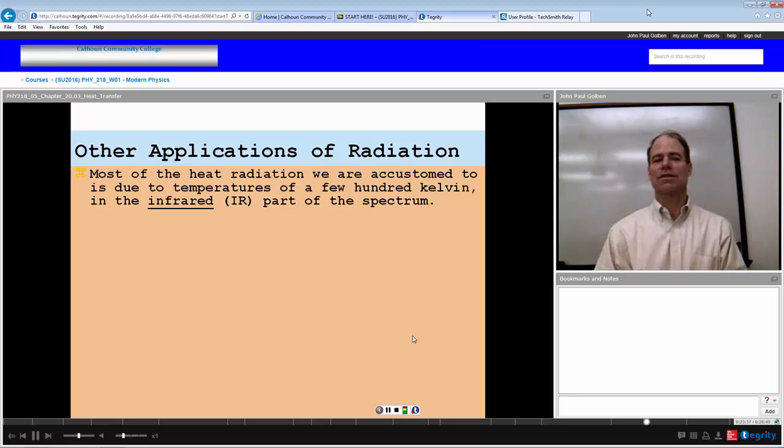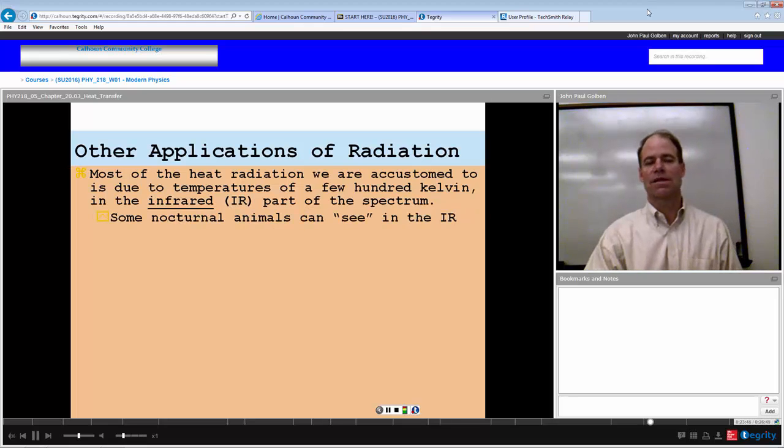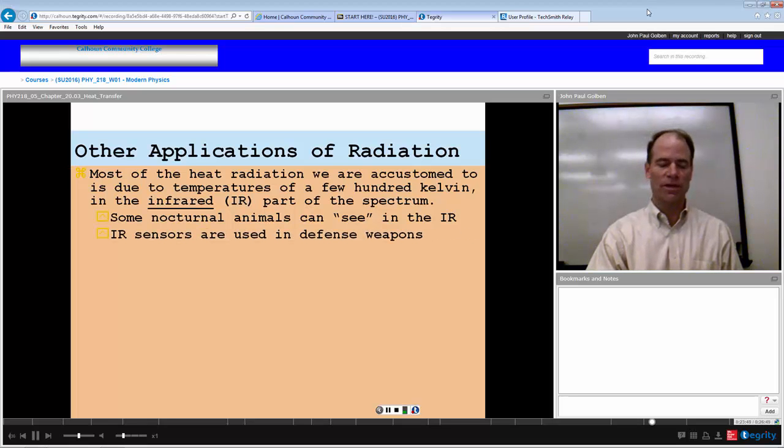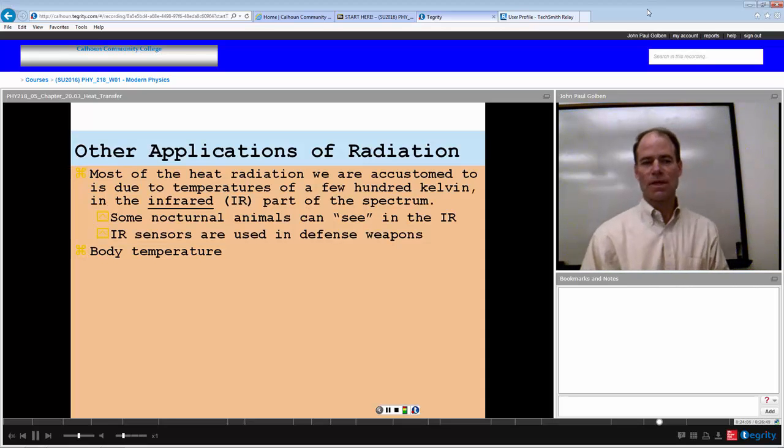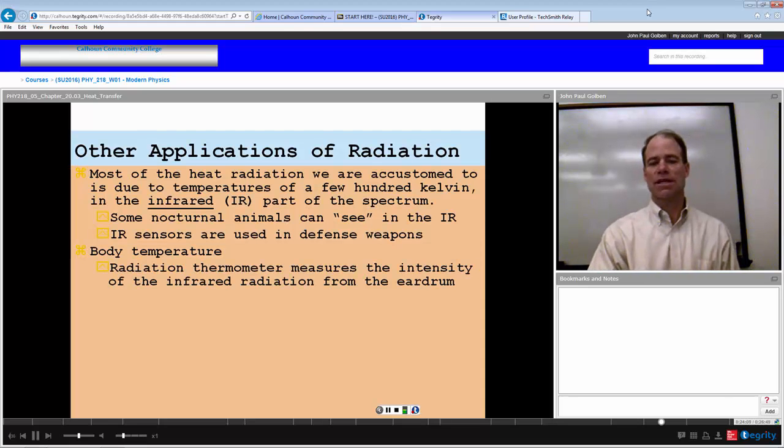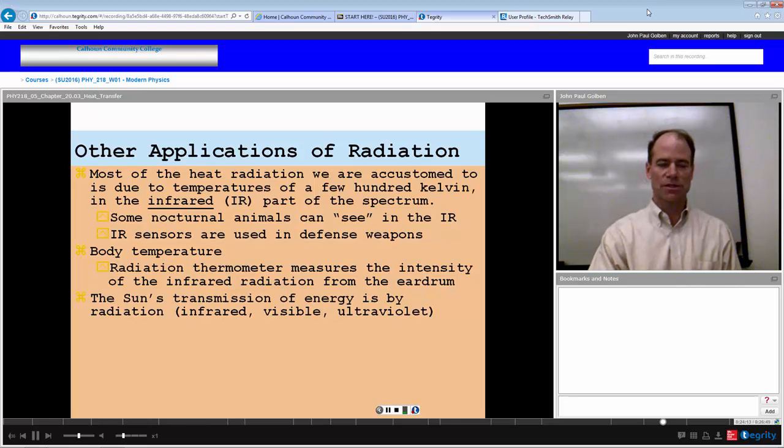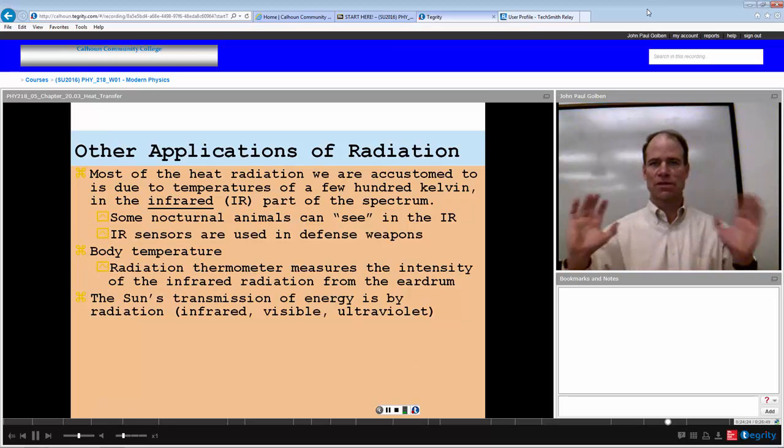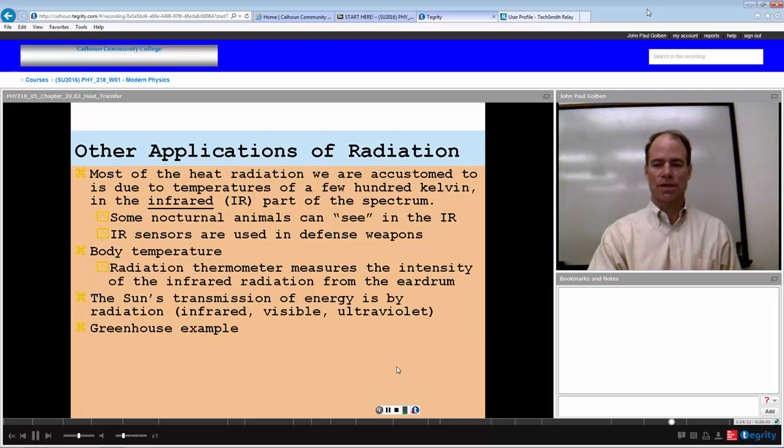Other applications of radiation: most of the heat radiation we are accustomed to is due to temperatures of a few hundred degrees. Some nocturnal animals can actually see in the infrared and we can't. We don't need it to survive so we were not adapted to that, but some nocturnal animals can do that. Infrared sensors are also used in defense weapons since many weapons can be hot. Body temperature radiation thermometer measures the intensity of the infrared radiation from the eardrum and measures your temperature as a result. The sun transmits energy in different forms of electromagnetic radiation: in the infrared which you can't see, in the visible which is most of the sun's radiation which we're much accustomed to, and in the ultraviolet which is above the frequency that we can see.